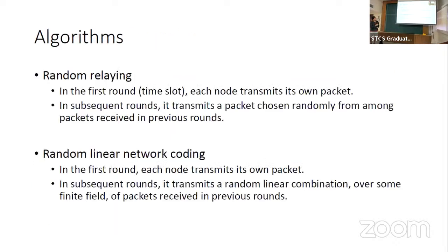We are going to look at two extremely simple algorithms. The first is random relaying: in the first time step everybody broadcasts their own message, so their neighbors in the graph get it; in all subsequent time steps each node picks a random message it has heard so far and broadcasts it. The other approach is random linear network coding. What we are going to show is that with random network coding we are already optimal, whereas random relaying is not optimal.